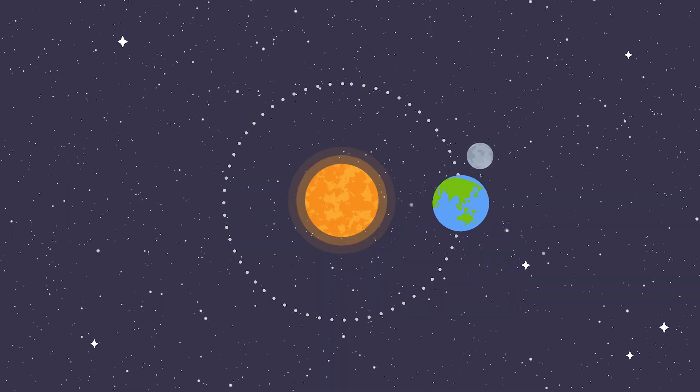Moon's distance. Our moon is slowly drifting away from Earth at a rate of about 3.8 centimeters per year. Over time, this gradual movement will have profound effects on our planet.